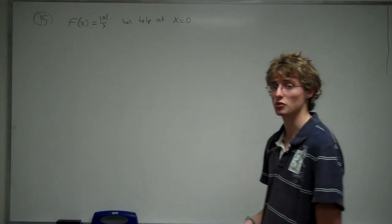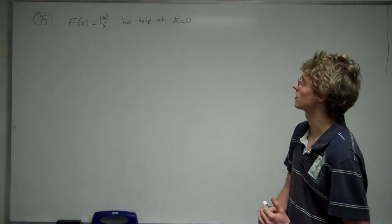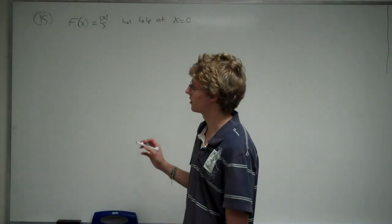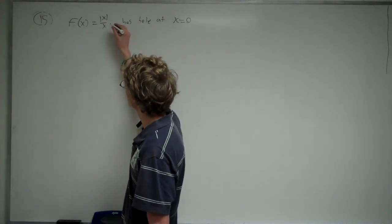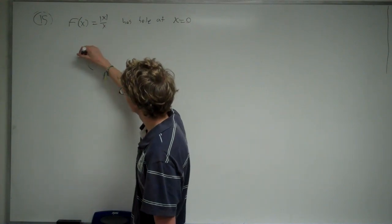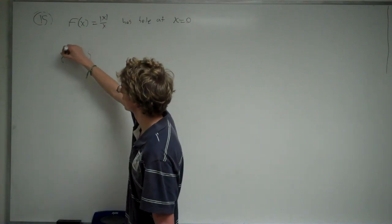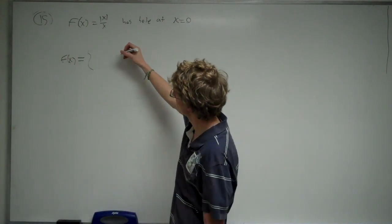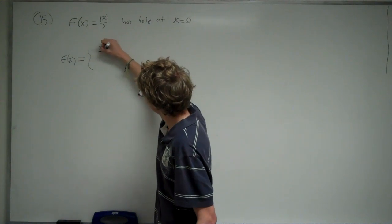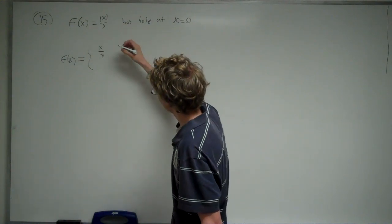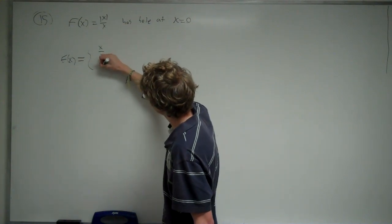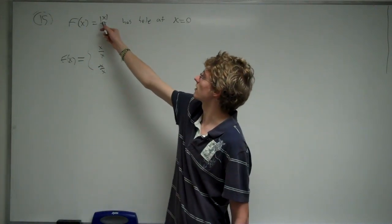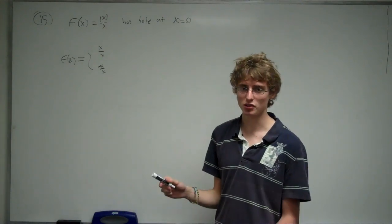Well, the first thing we want to do is graph it to see if there is actually a hole at x equals 0. Now, to do that, since there is an absolute value up there, we are going to get rid of the absolute value and rewrite this as a piecewise function. Now, to get rid of the absolute value, we are going to split up into two fractions. It's going to be x over x and negative x over x because this x inside this absolute value here can either be positive or negative.